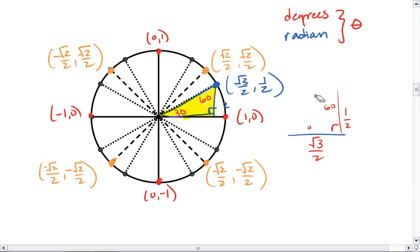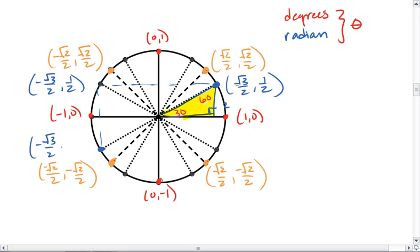Again, this lets us label our corresponding points. We get negative root 3 over 2, positive 1 half. We get negative root 3 over 2, negative 1 half. And we get positive root 3 over 2, negative 1 half.